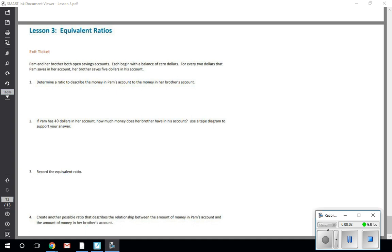Hi everybody, today in math we worked on equivalent ratios and we use tape diagrams to help us understand equivalent ratios. In this problem, Pam and her brother both open savings accounts, each begin with a balance of zero dollars. For every two dollars that Pam saves in her account, her brother saves five dollars in his account.